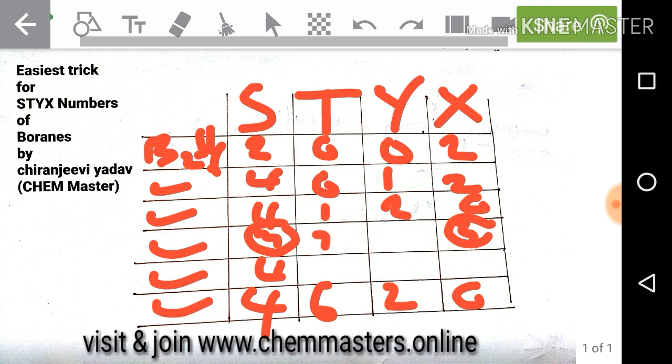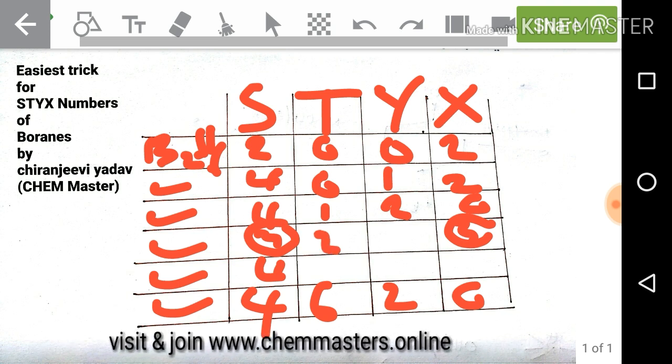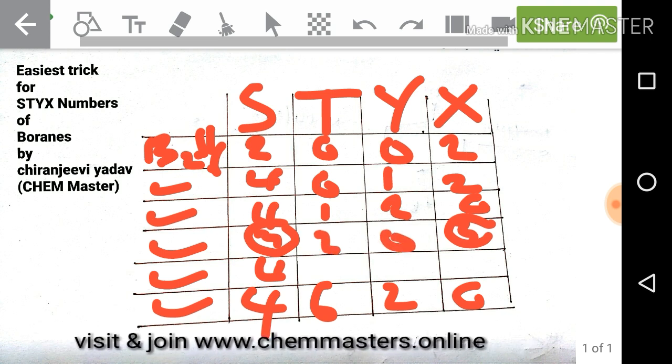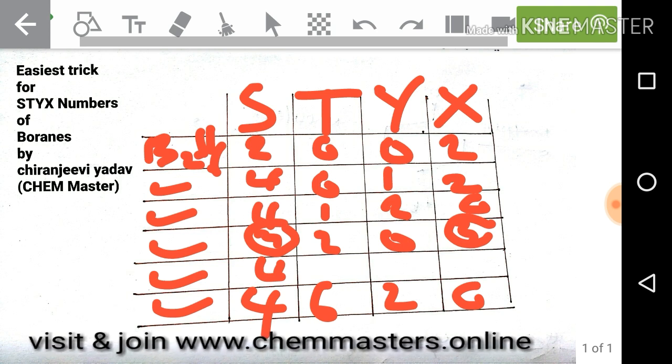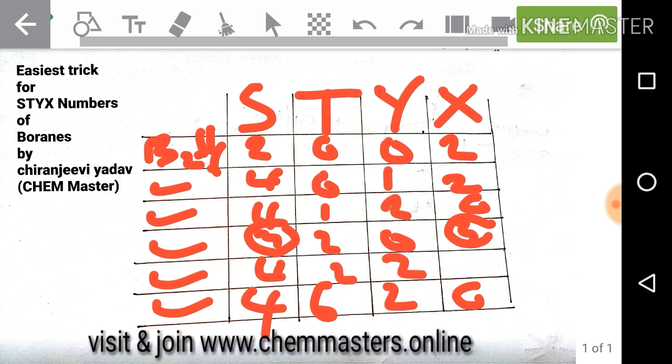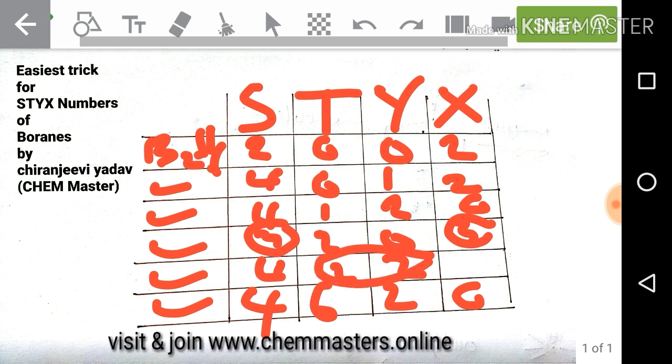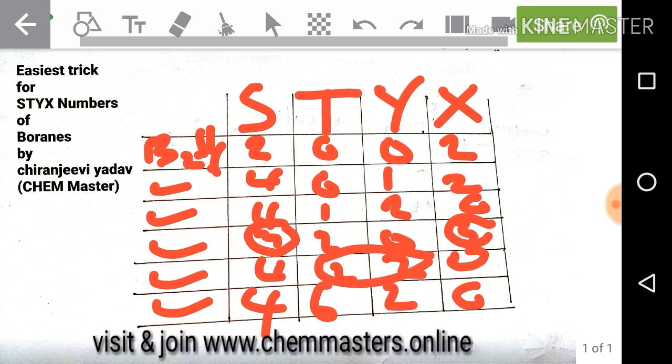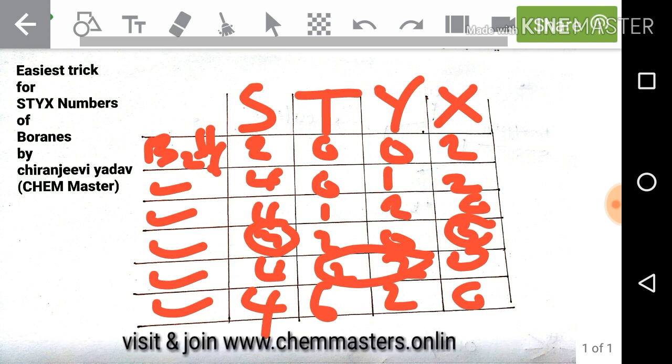Now after 1 we need to start from 2, so we said after 2, 0, and it is completed. Now after 2 just start from again 2 and followed by 2. So here another trick, just use 2, 2 followed by 0. So this is the easiest way to remember STYX numbers of Boranes long time.